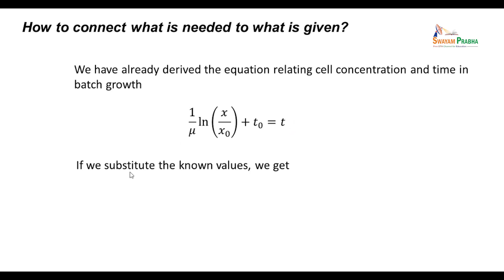Now, we need time here. If we substitute the known values, we get 1/0.5 ln(4/0.5) + 20/60 = t. We need to work with a consistent system of units. In other words, the units of each term in an equation must be the same. We need to convert the 20 minutes into hours, therefore we are dividing by 60. 20 minutes divided by 60 minutes per hour is one-third hour.